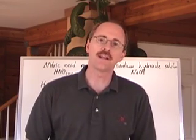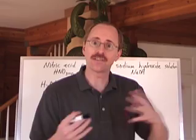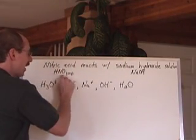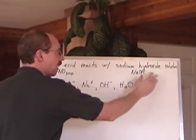Here's the technique for writing Bronsted-Lowry equations when you're given a mixture of acids and bases together. So here's the question: Nitric Acid, which is HNO3, reacts with Sodium Hydroxide, which is NaOH.